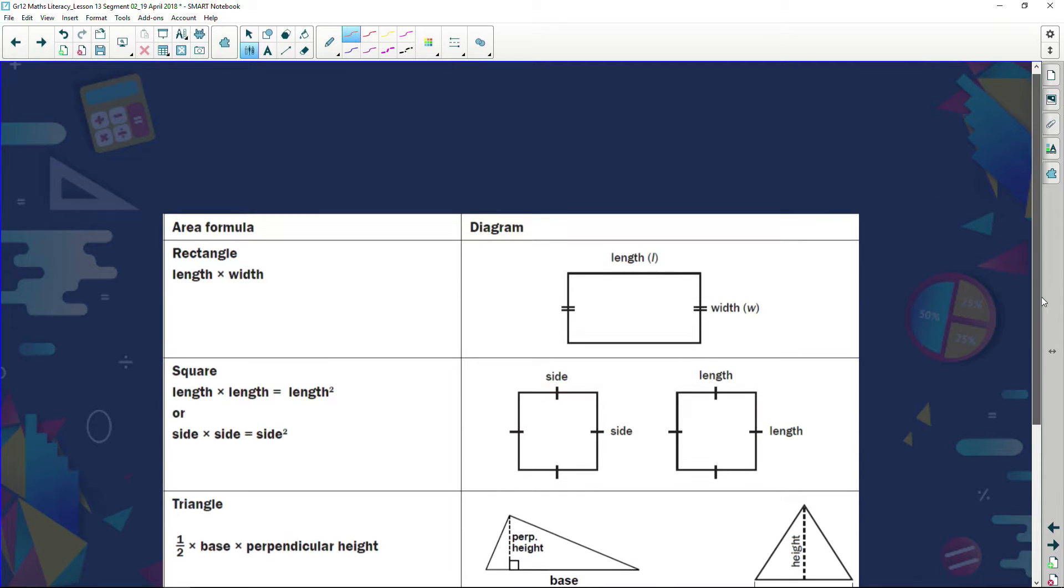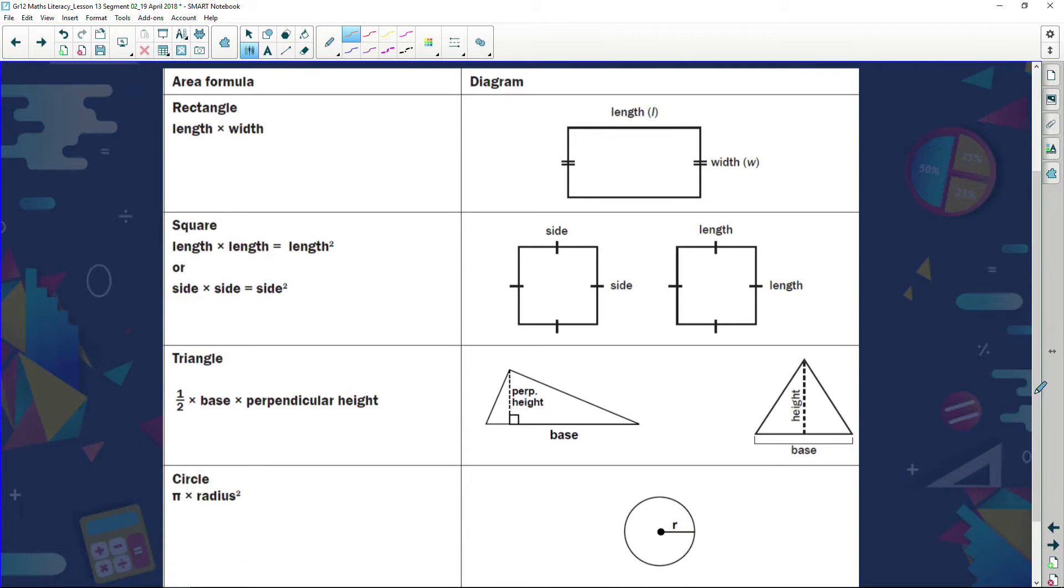And then we looked at a few formulas as well, and we said when we're trying to calculate the area of any rectangle, we just say length times width. For a square, we can look at a rectangle and let's just say it's length times width, but we know for a square the width and the length are the same thing.